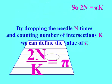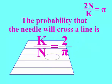By dropping the needle N times and counting number K of intersections with the lines, we can define the value of pi. The probability that the needle will cross a line is 2 over pi.